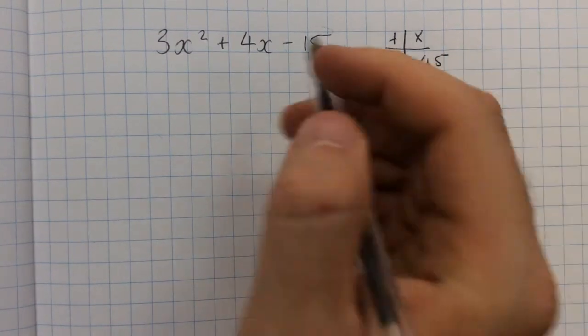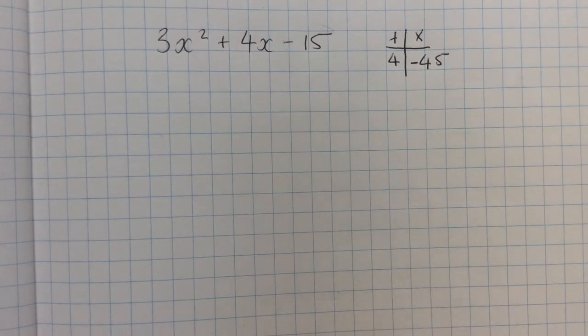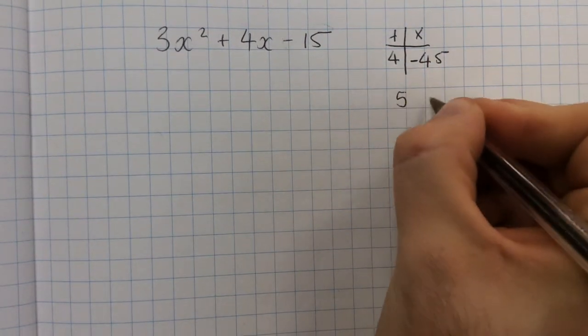So in this case it's minus 45, and we're still adding to make the number in the middle 4. The numbers that make 45 are 5 and 9.